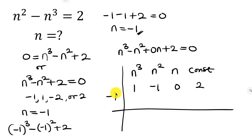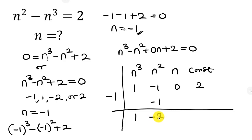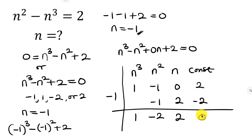Bring down the first coefficient (1). Multiply by the divisor: 1 times -1 = -1; write under the next coefficient and add: -1 plus -1 = -2. Multiply -2 by -1 = positive 2; write under 0 and add: 0 plus 2 = 2. Multiply 2 by -1 = -2; write under 2 and add: 2 plus -2 = 0.